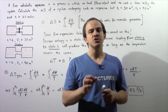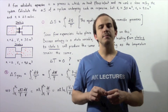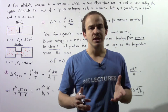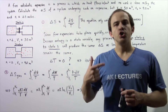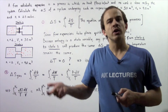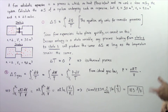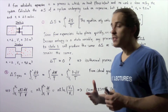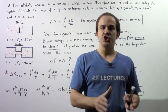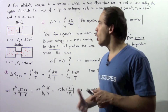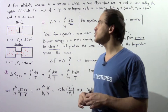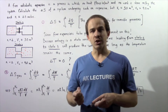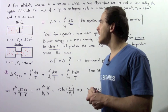Before we look at the example, let's recall what a free adiabatic expansion is. A free adiabatic expansion is a process in which no heat flows into or out of our system and no work is done by or on our system. So the internal energy of our system remains zero, and the change in temperature is also zero — the temperature remains constant.